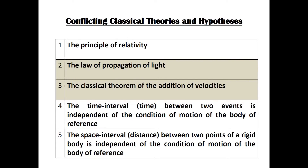The two items are the law of propagation of light and the classical theorem of the addition of velocities. We will first look at the theorem of the addition of velocities. This theorem is brought up in section six of Einstein's book when he returns to his example of the train and the embankment.